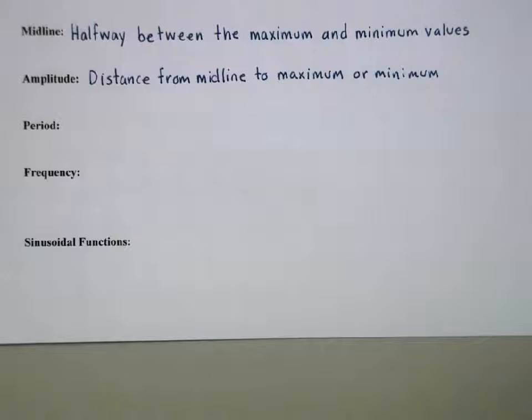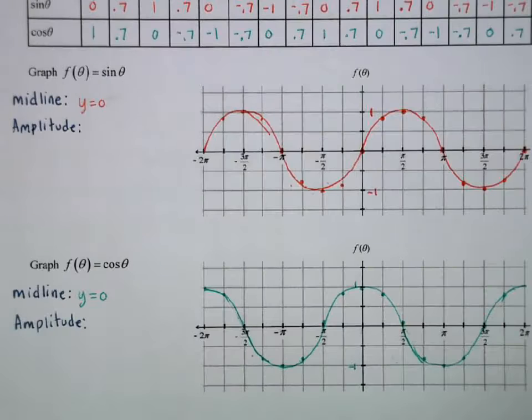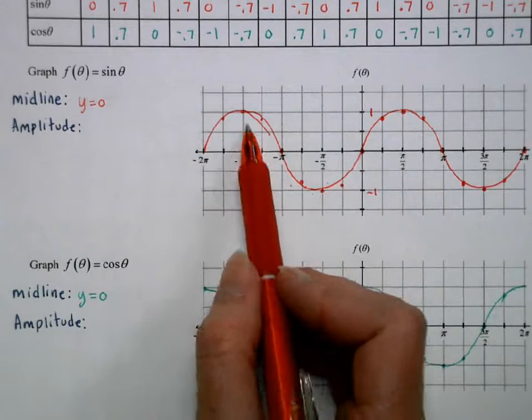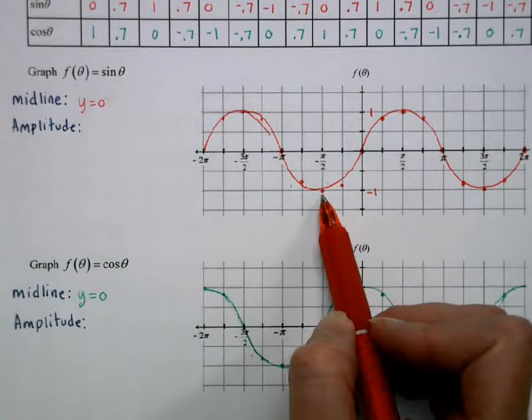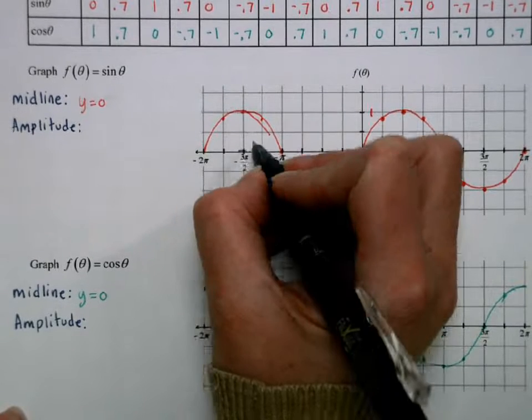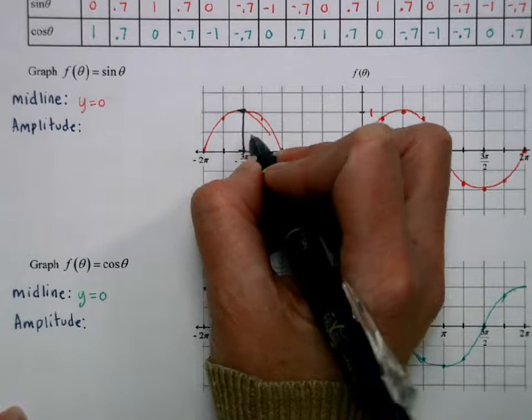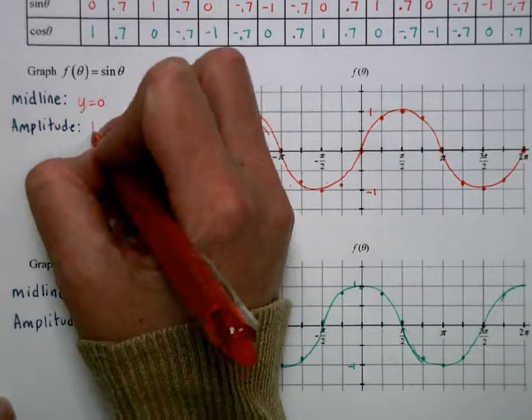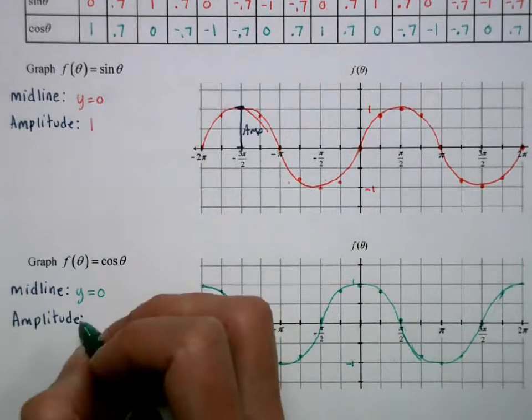The next attribute that we're going to talk about is the amplitude, really the height of our curve. So it's going to be the distance from the midline to the maximum or the minimum. So our amplitude for the sine curve, I've got my midline at 0, and we're either going 1 up or we're going 1 down. So this distance here, that's our amplitude. So on our sine curve, it's going to be 1. On our cosine curve, that's going to be 1.